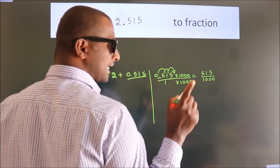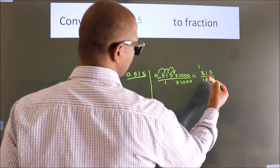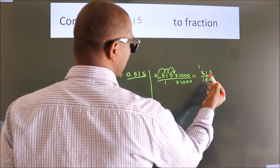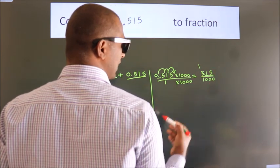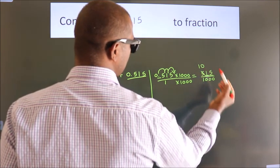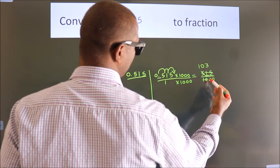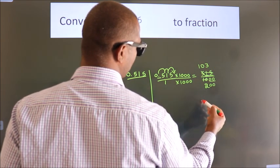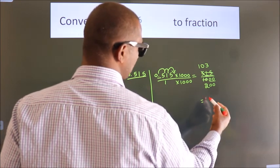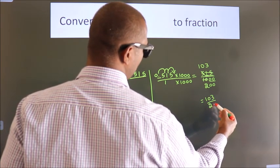Now I cancel with 5. 5 ones. 1 smaller than 5, so we should take 2 numbers, 15. Whenever we are taking 2 numbers, compulsory put 0. 5 3s, 5 2s. These 0s as it is down. So the fraction we got is 103 by 200.